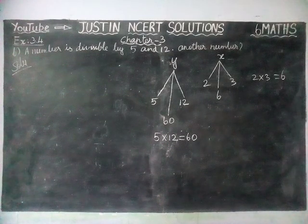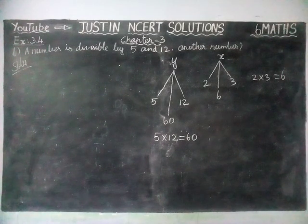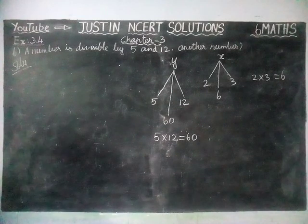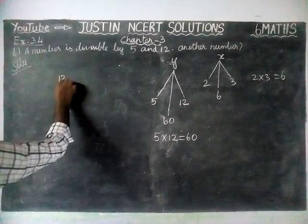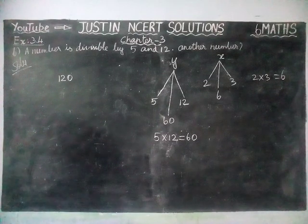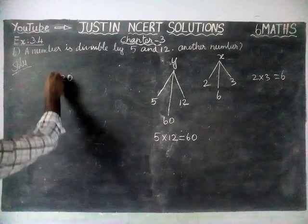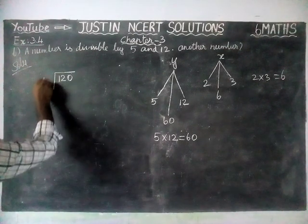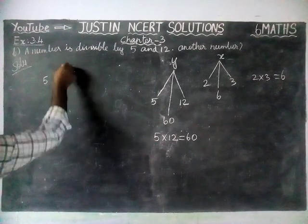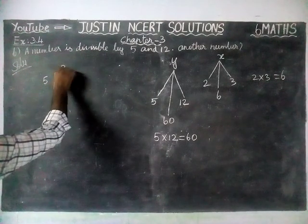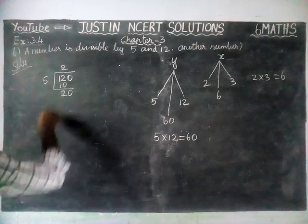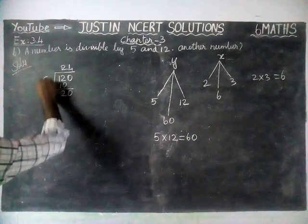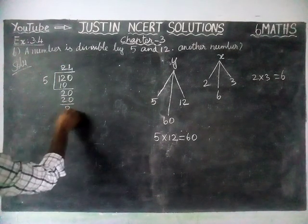5 and 12 are factors of 60. We can check it by using examples. We will take the number 120 and divide it by 5. 5 times 20 is 100, 5 times 4 is 20, so 5 times 24 is 120 with remainder 0.